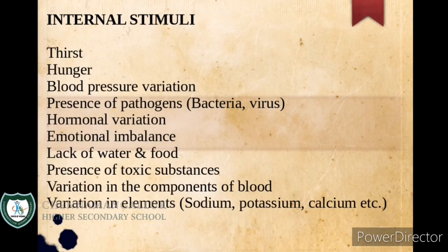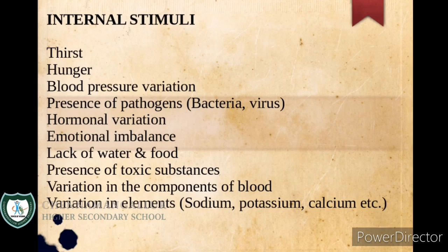Internal stimuli are changes which happen inside the body. Examples include thirst, hunger, blood pressure variation, presence of pathogens (meaning bacteria, virus and so on), hormonal variation, emotional imbalance such as anxiety, tension, depression, lack of water and food, presence of toxic substances, variation in the components of blood, and variation in elements like sodium, potassium, calcium, etc.